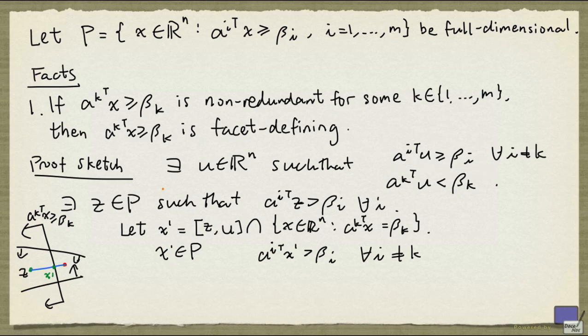Now what we're going to do is, we're going to show that the face induced by this inequality has dimension n-1. And we'll do this by construction. Because if you look at this picture here, there's some room to move around on the boundary of the half space defined by this inequality.